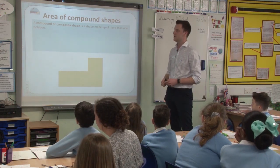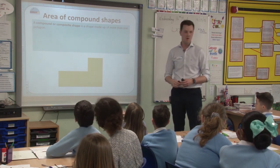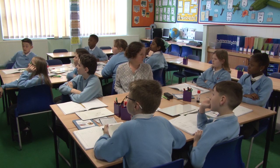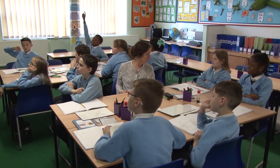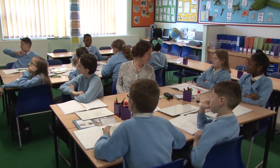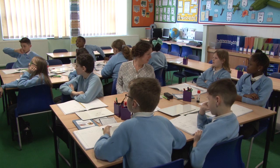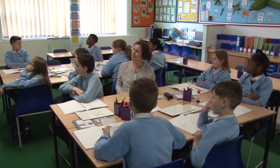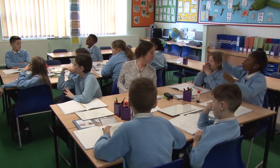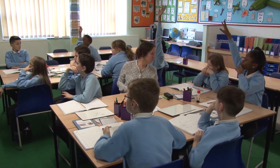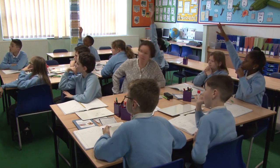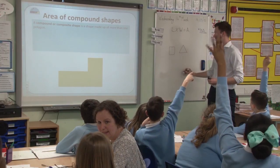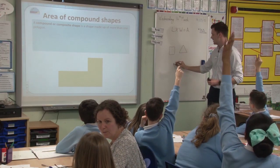A compound or composite shape is a shape made up of more than one polygon. For a star — who can tell me what a polygon is? Victor? Is it a shape that is not like a ring? Not quite. This is a polygon — I'm going to draw them as accurately as I possibly can. This is a polygon. Here's another polygon. Here's another polygon.